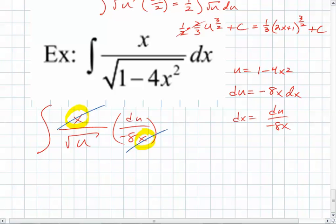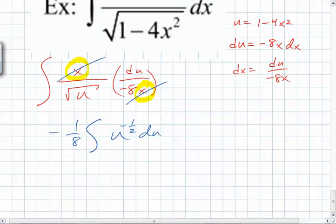If you pick the wrong u value, that's frequently what happens. If you pick the wrong u value, you end up with u's and x's, and that makes you sad. So what do you end up with? Negative 1 eighth, the integral of u to the negative 1 half du. Can you integrate that?